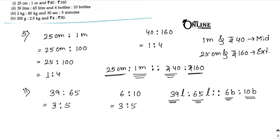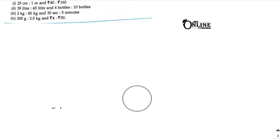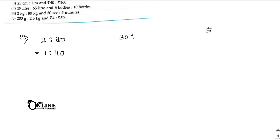Sum number 3: 2 kg is to 80 kg — simplifies to 1 is to 40. The second ratio is 30 seconds is to 5 minutes. Convert 5 minutes to seconds: 5 × 60 = 300 seconds. So 30 is to 300, which simplifies to 1 is to 10. First was 1 is to 40, second is 1 is to 10 — not equal, so not in proportion.